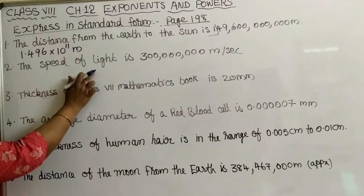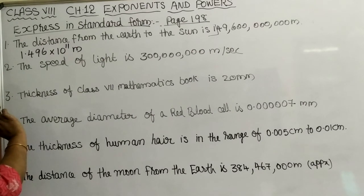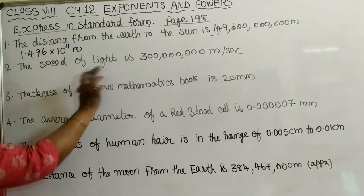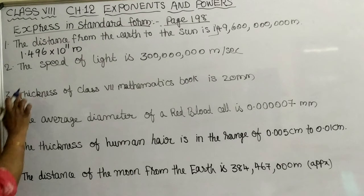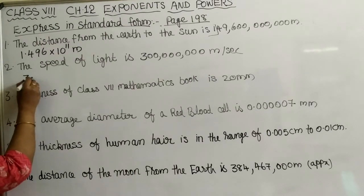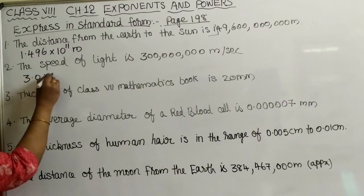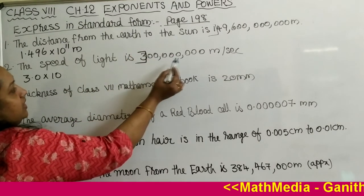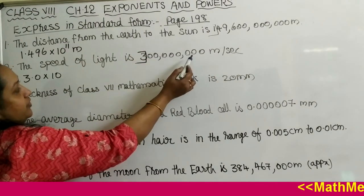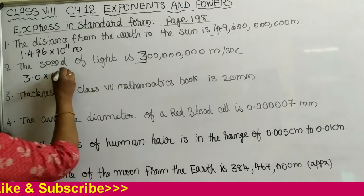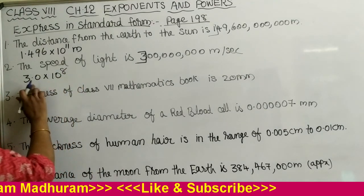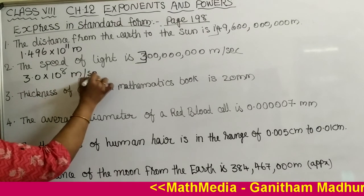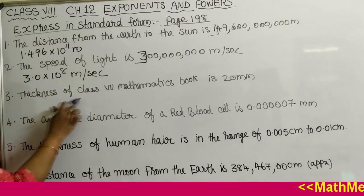The speed of light is 300,000,000 meters per second. We write it as 3.0 and then count the number of digits after the first digit — there are 8. So we write 3.0 into 10 raised to 8 meters per second.